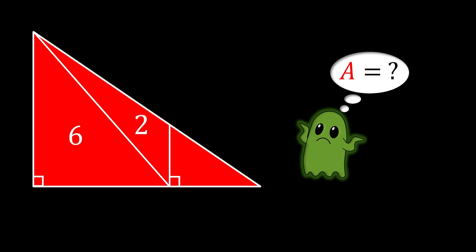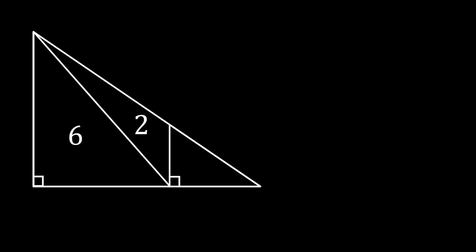Alright, so let's solve this one together. Let's first label the vertices of our big triangle as A, B, and C. Then let's label the intersection point between the perpendicular and the base as D, and the intersection point between the perpendicular and the hypotenuse as E.